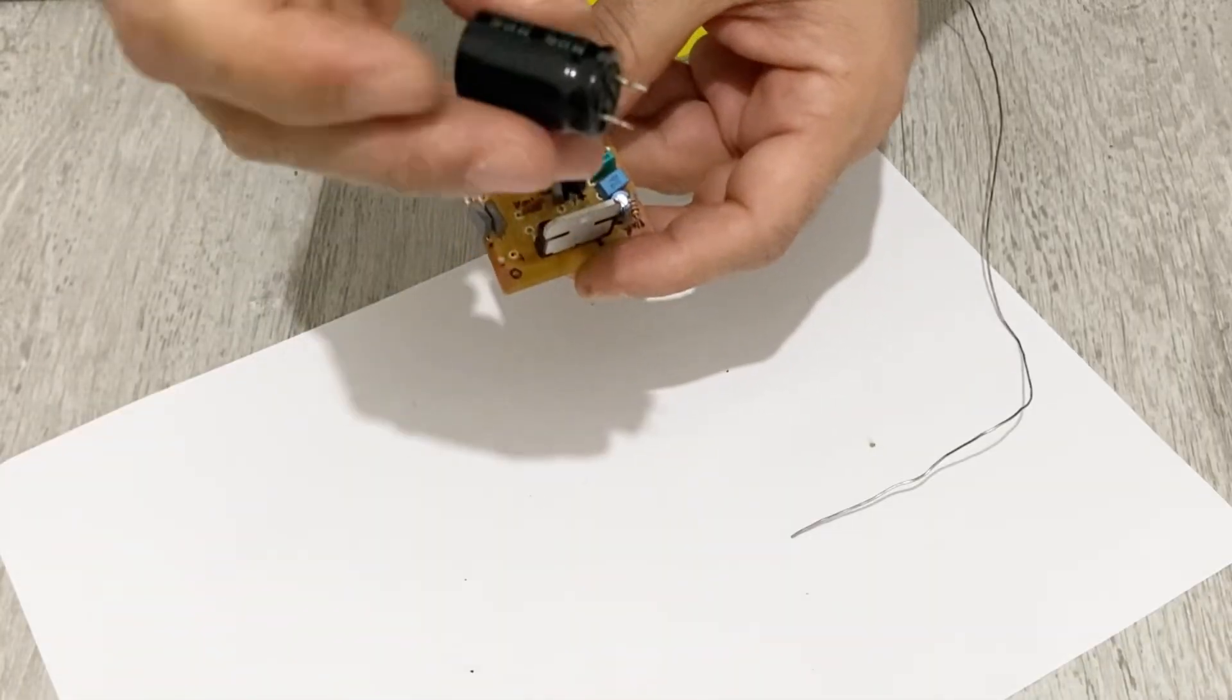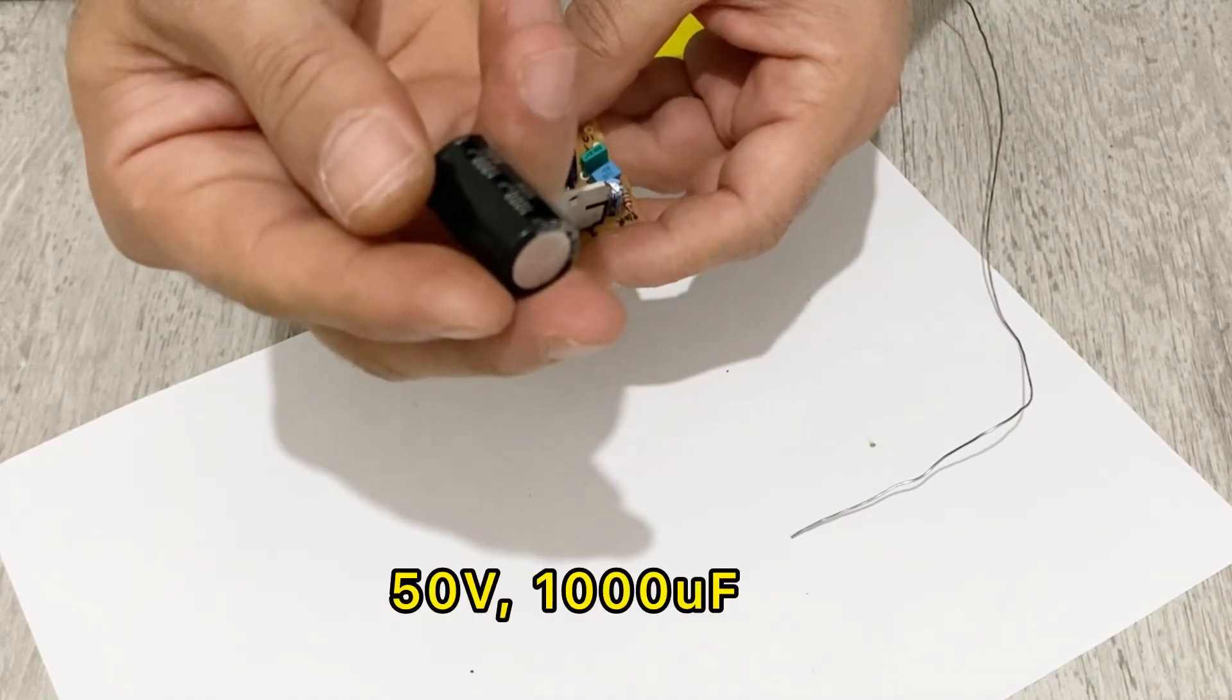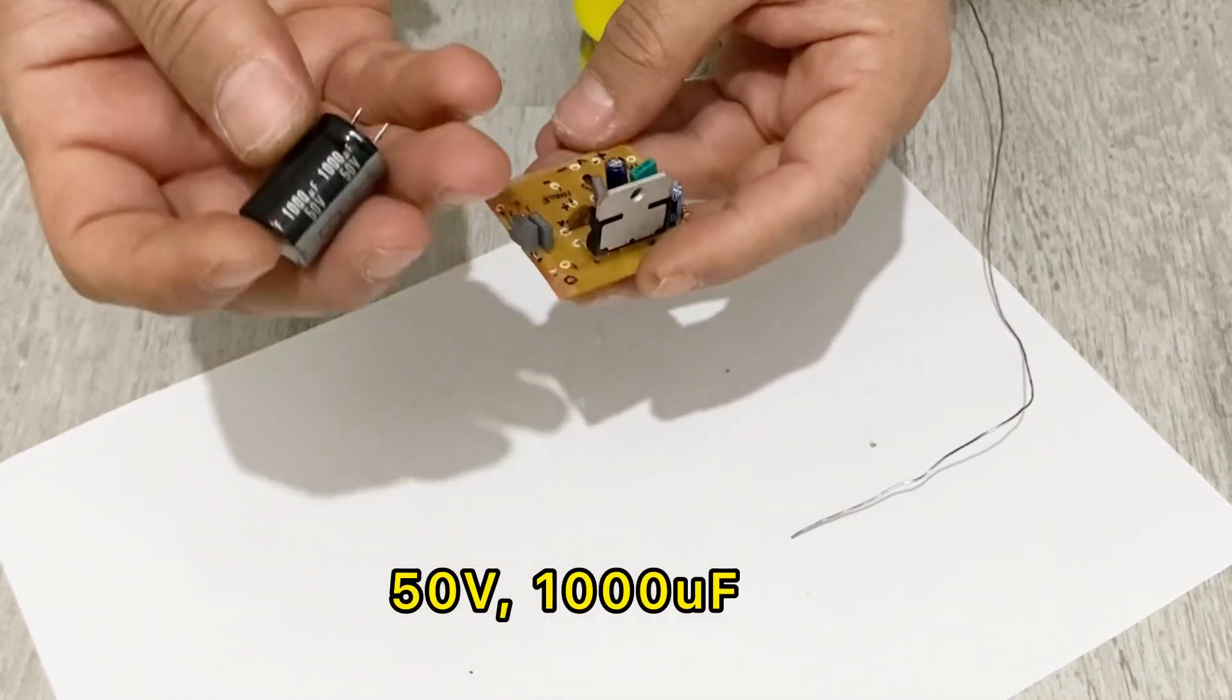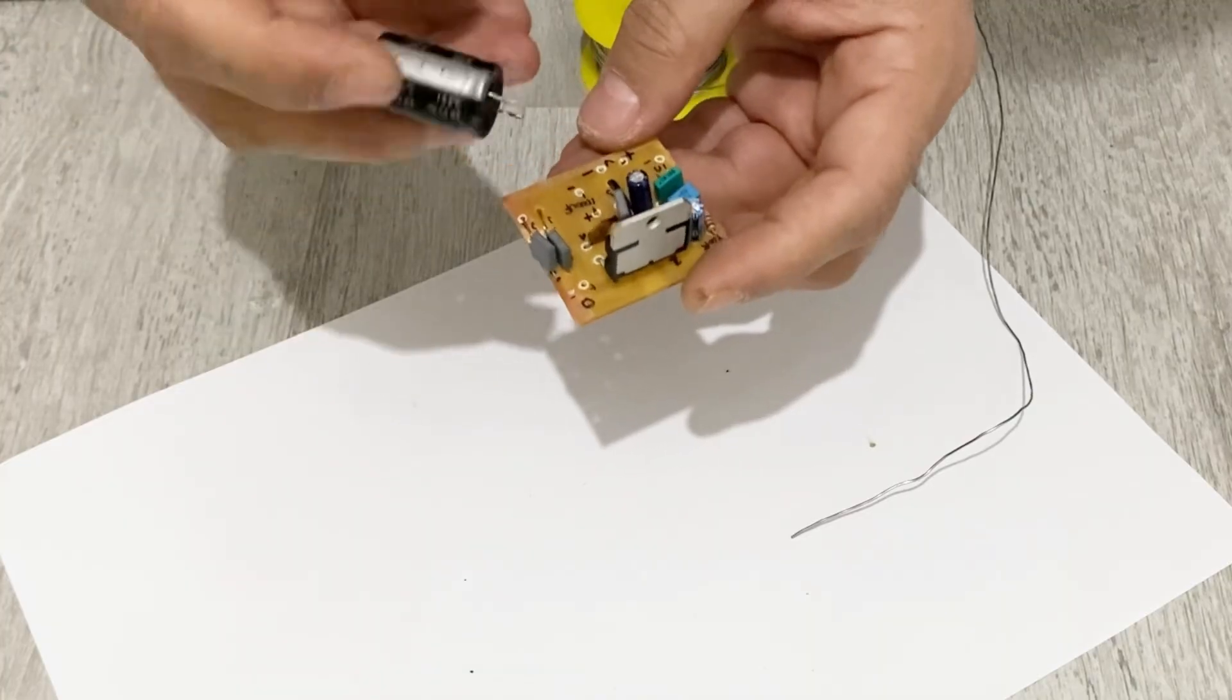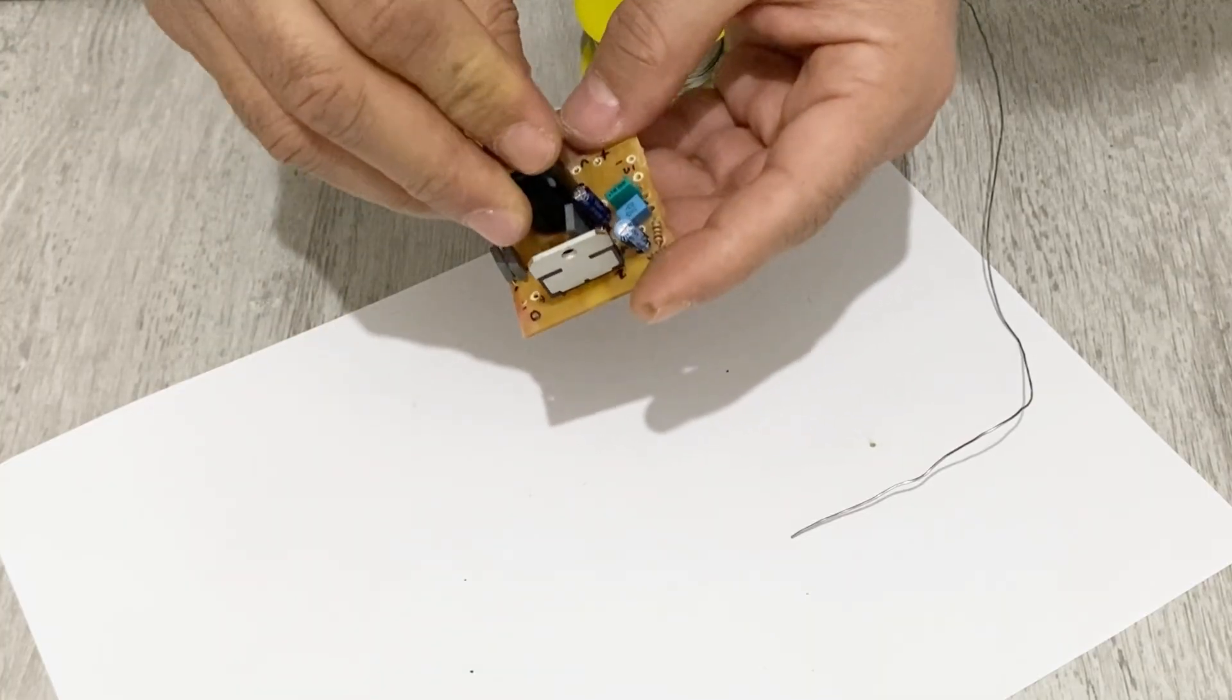Now lastly I'm going to place my 1000 microfarad, 50 volt electrolytic capacitor. The positive and negative—be careful about that, my friends.